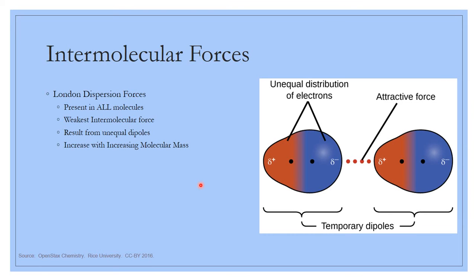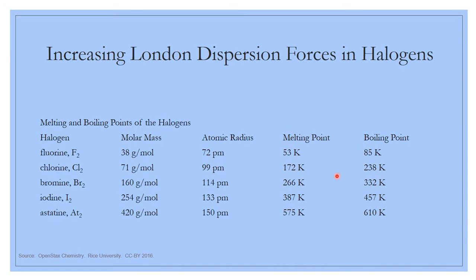London dispersion forces are really, really weak. The only thing that makes them stronger is increasing molar mass — the bigger the molar mass, the bigger the London dispersion force. Looking at the halogens: fluorine, chlorine, bromine, iodine — these are all present diatomically. As molar mass increases down the group, melting point and boiling point also increase.